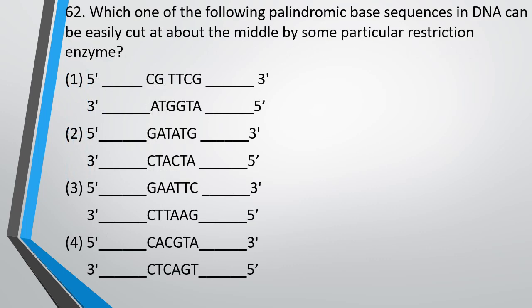Question number 62. Which one of the following palindromic sequences of bases in a DNA can be easily cut at about the middle by some particular restriction enzyme? The correct answer is option 3 — that is 5' GAATTC and 3' CTTAAG. This is a palindromic sequence which can be easily cut by a restriction enzyme.